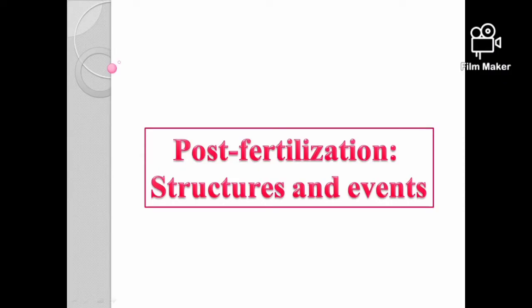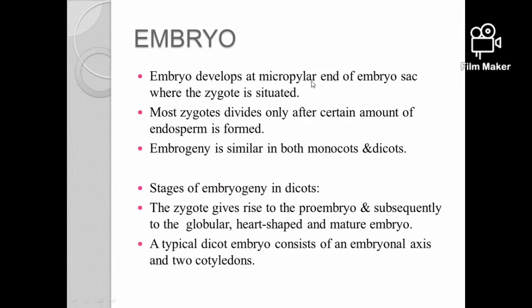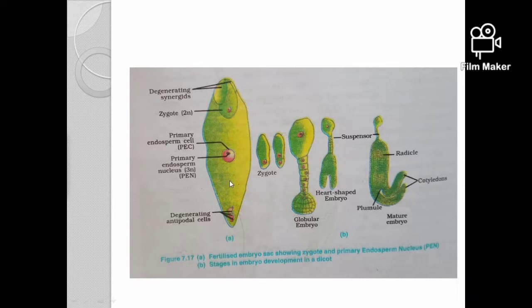Hello, we are going to discuss the topic post-fertilization: its structures and events, which is in the chapter 'Reproduction in Plants.' The embryo develops at the micropylar end of the embryo sac, where the zygote is situated. The zygote undergoes mitotic division to form the embryo.